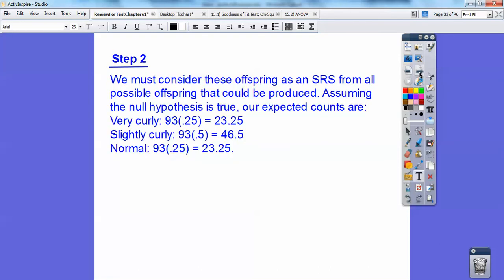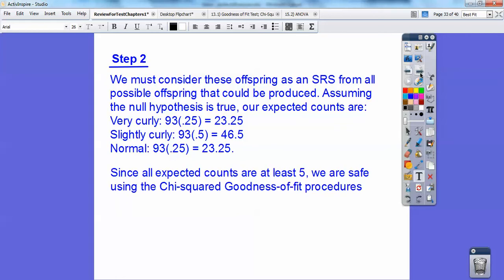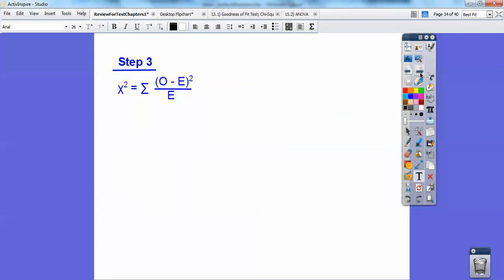So assuming the null hypothesis is true, our expected counts are 93 times each proportion right there. So we get these numbers. These are my expected numbers right here. So since all expected counts are at least five, we're safe to use the chi-squared goodness of fit test. So there's my chi-squared right there. So it's the sum of all the observed counts minus the expected counts squared divided by the observed counts. So there's only three of them. So you can do all of them if you wanted.